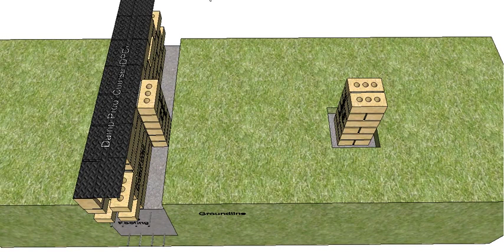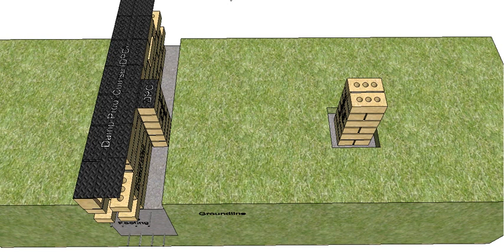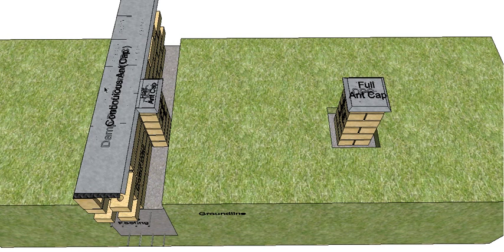We have our damp proof course. This one's wide enough to cover both walls. Also for our engaged pier and our isolated pier, and we have our air cap as well. And again, this one is wide enough to cover both walls.